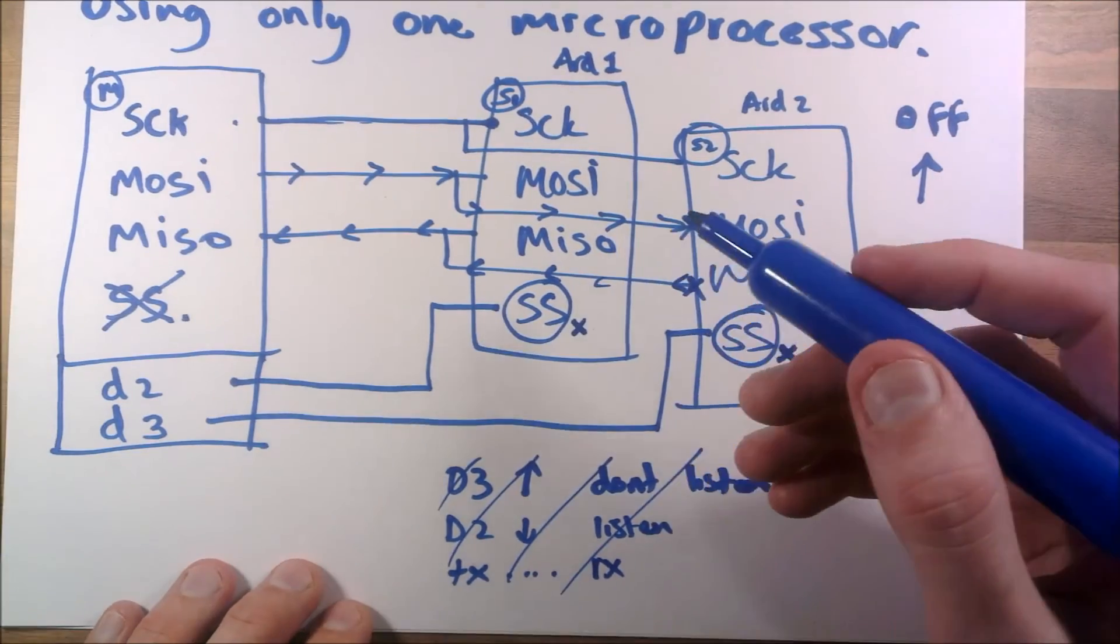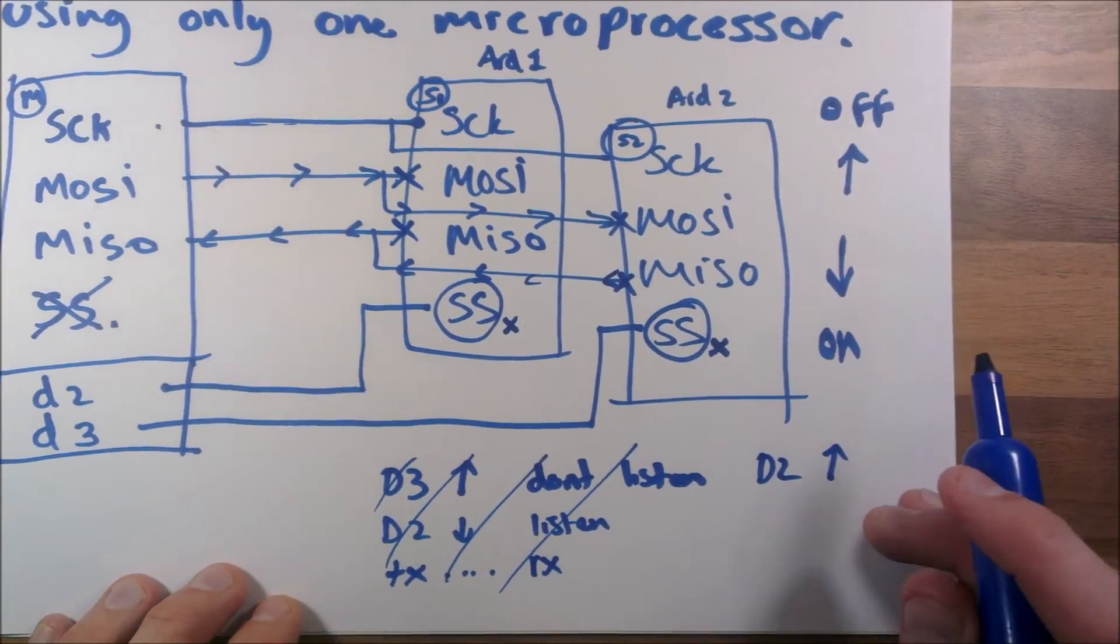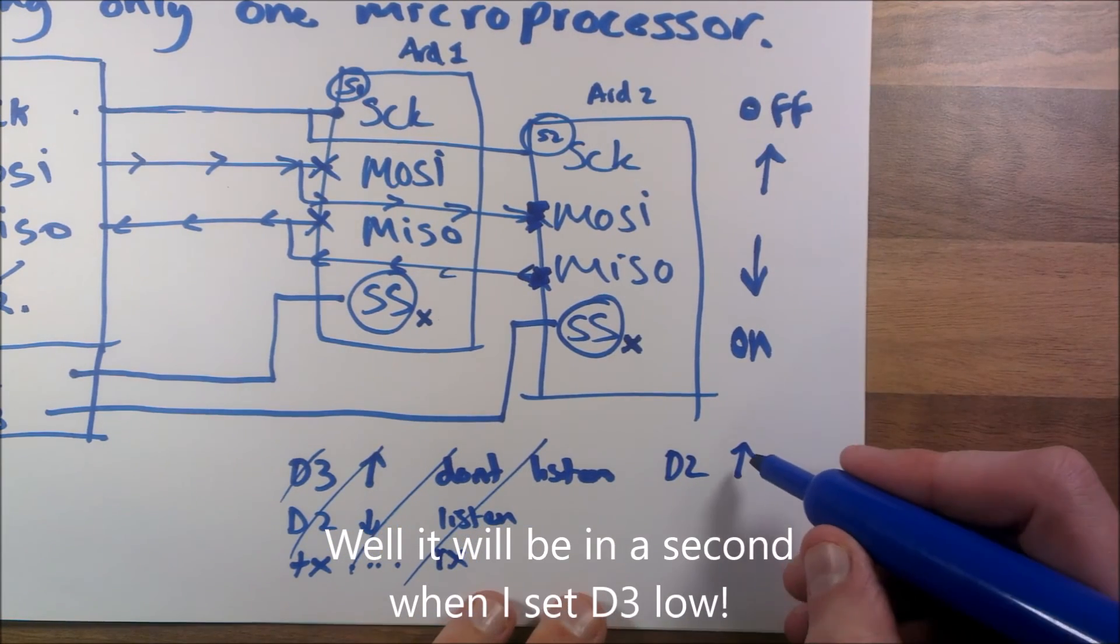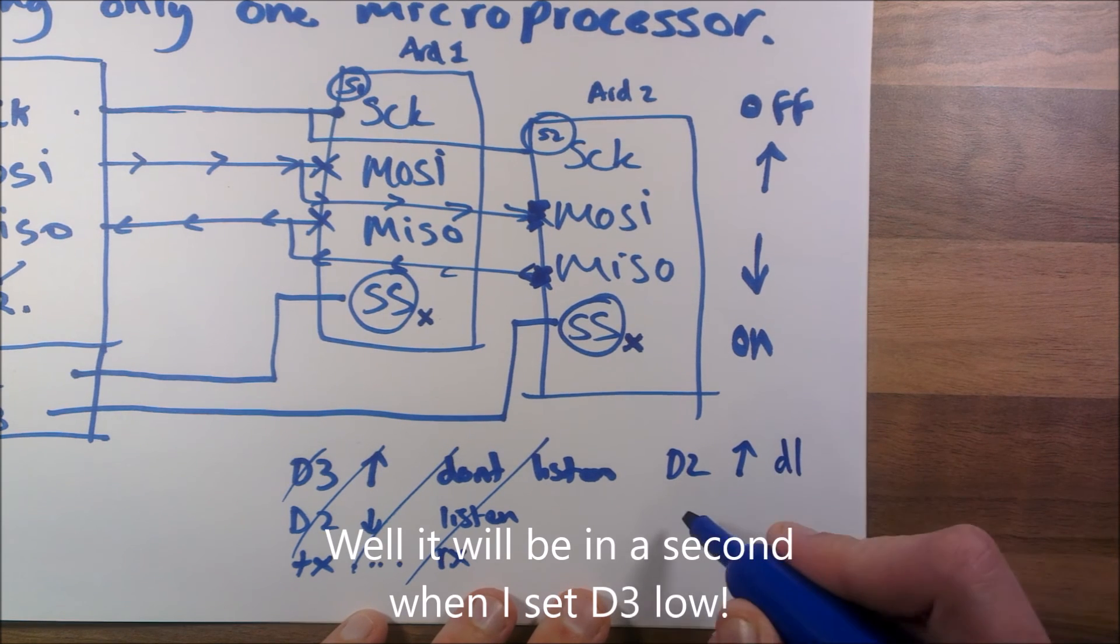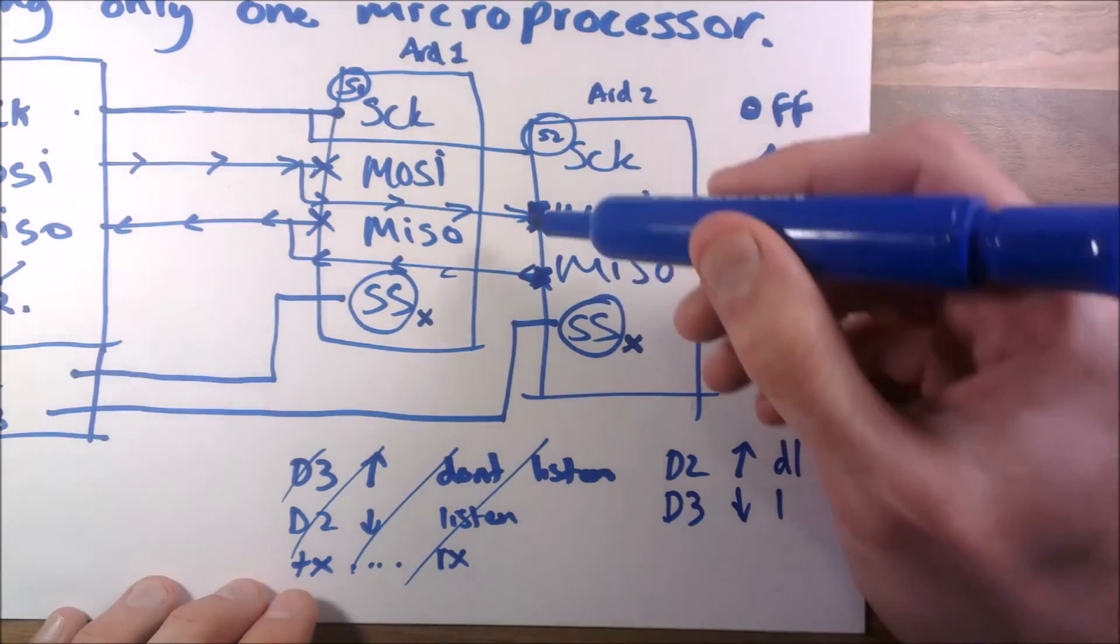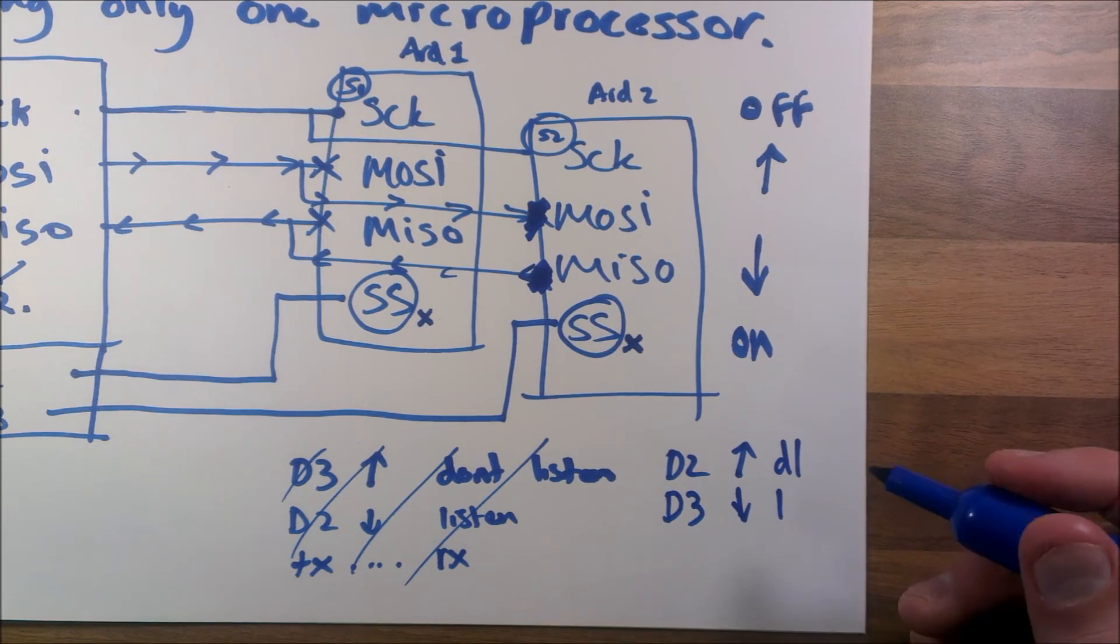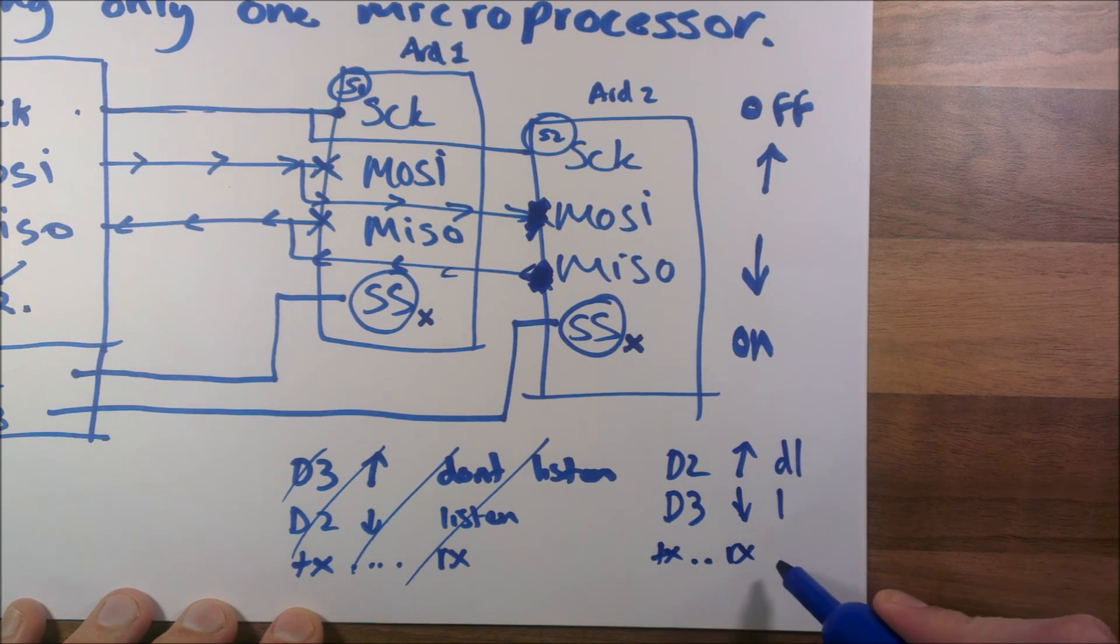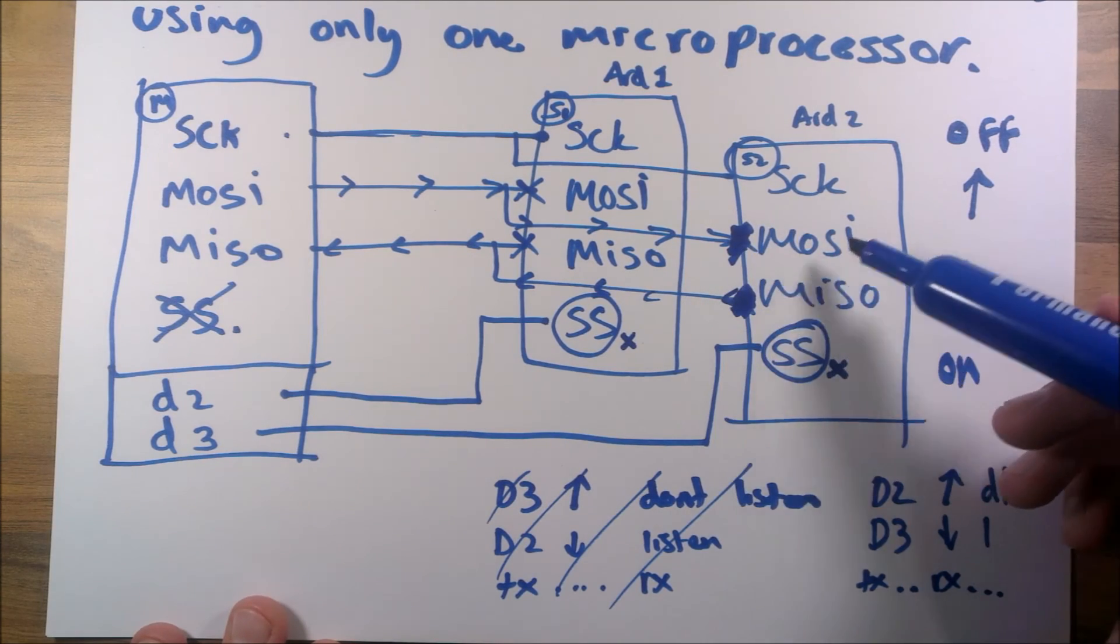Then we do the opposite - we set D2 high which means that D2, which is Arduino one, doesn't listen and doesn't talk, whereas this one is open again. So we've set D2 high which means don't listen, and D3 low which means listen. So actually at this point this can now listen, and then we can transmit or receive and it will work.